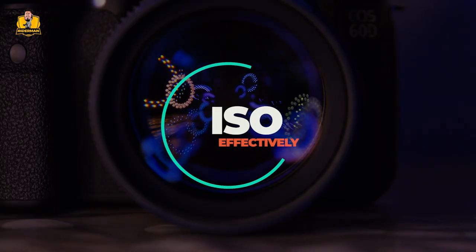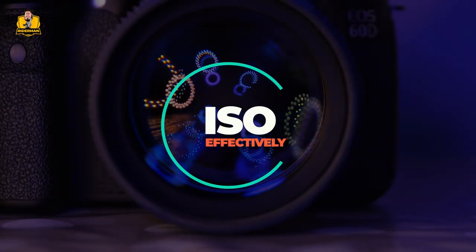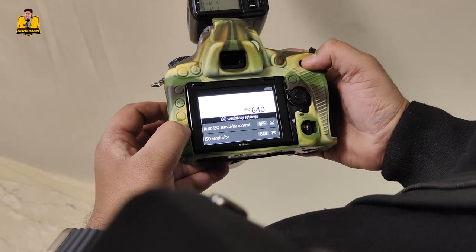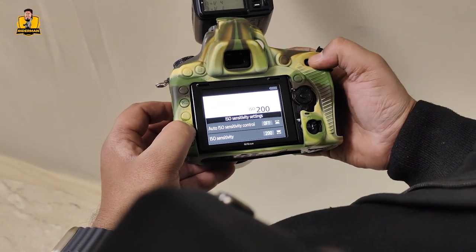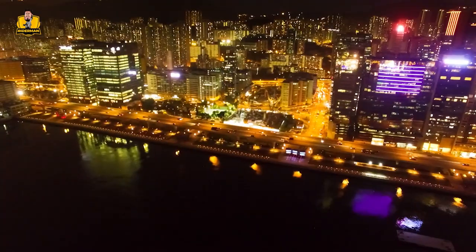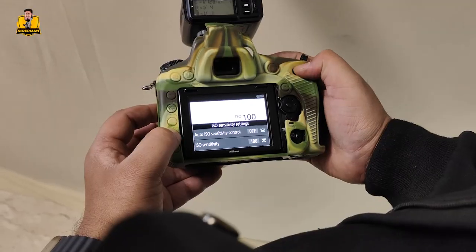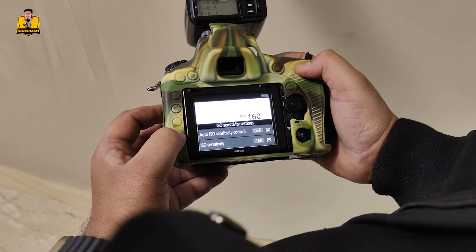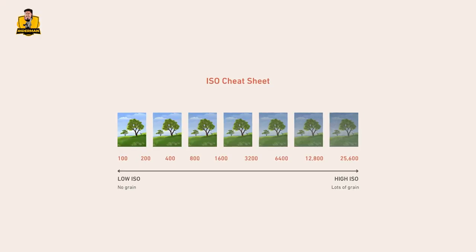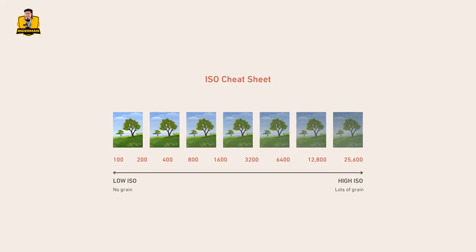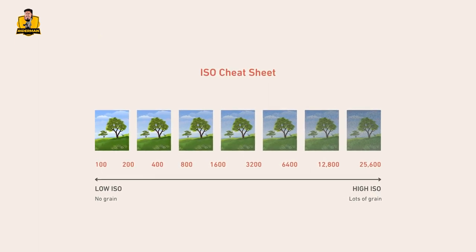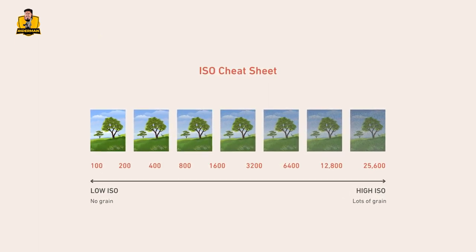Now let's talk about how to use ISO effectively. When shooting in bright daylight, choose a lower ISO to maintain image sharpness and reduce noise. In low light situations, crank up the ISO to capture more light and avoid blurry photos. But be cautious — higher ISO settings can introduce noise, so find the balance that works best.